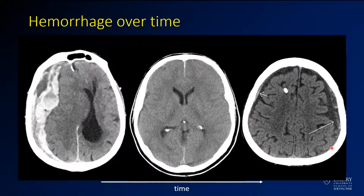Here you have an example of hemorrhage evolving over time. You have a big right-sided convexity subdural hematoma. Here you see it's at a very acute phase — it's very bright. The way this is windowed, it's almost as bright as the adjacent bone, although it's certainly not that dense. You see a lot of brightness in the extra-axial space and layers where the serum has collected off.